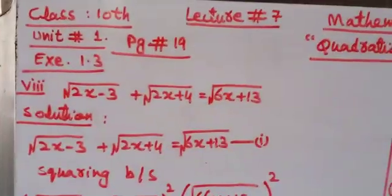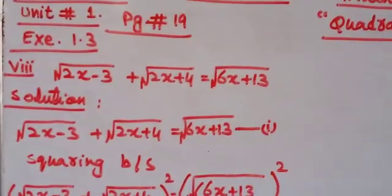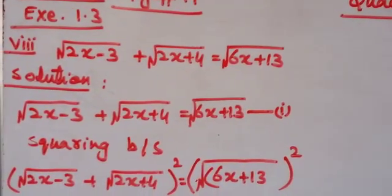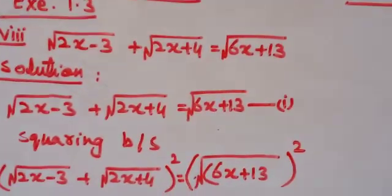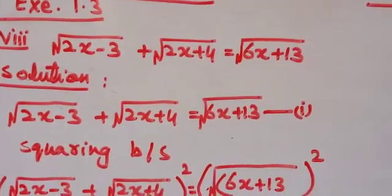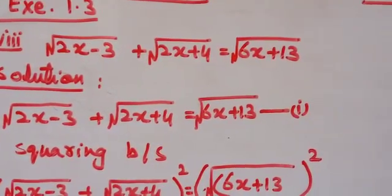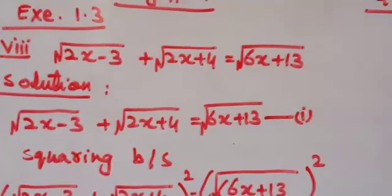Now open your book page number 19, exercise number 1.3, question number 1, part 8. The equation is: √(2x − 3) + √(2x + 4) = √(6x + 13).